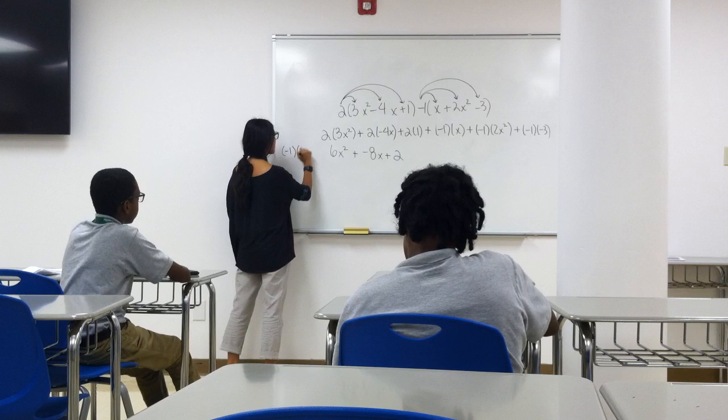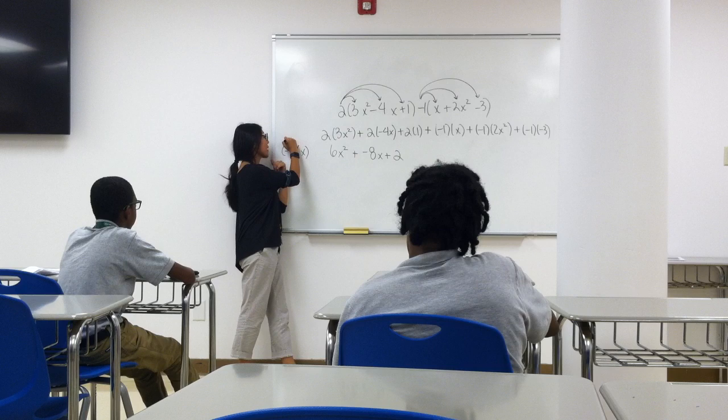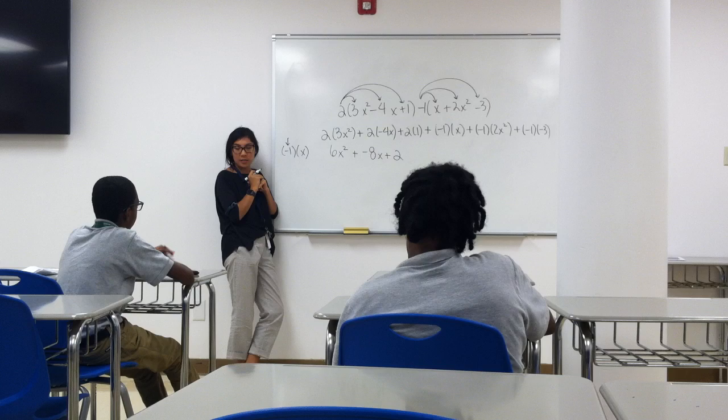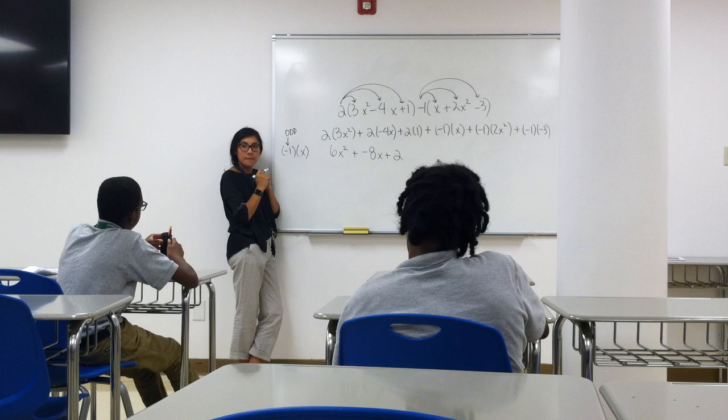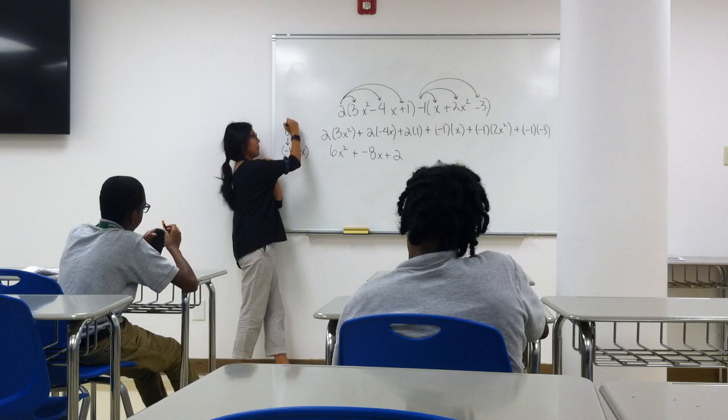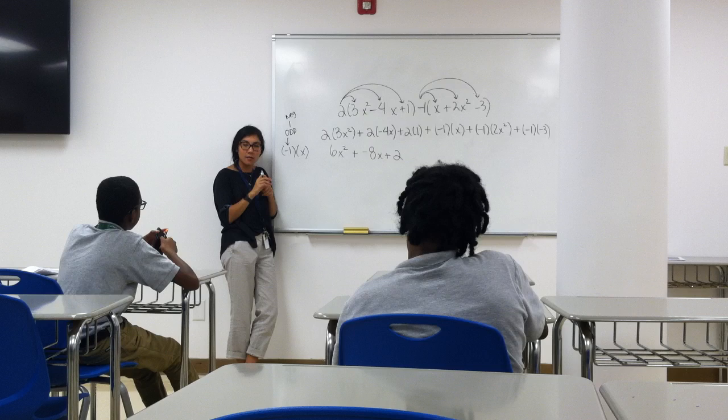All right, let's break this down. We have negative one times x. How many negatives are in this? One. One negative. So is my answer going to be odd or even? One. Is one odd or even? Odd. So is our answer going to be negative or positive? Positive. If there's one negative, it's going to be negative.